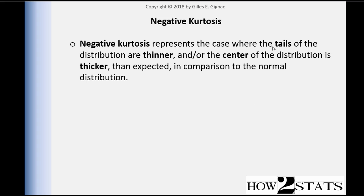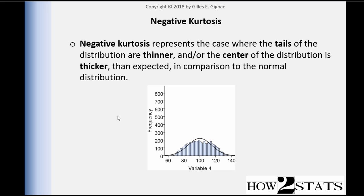Negative kurtosis represents the case where the tails of the distribution are thinner — not thicker, but thinner — and the center of the distribution is itself thicker than expected, in comparison to the total absence of any kurtosis or the presence of the normal distribution. This is what a negative kurtotic distribution looks like. The tails are thinner; there's not much going on there. You can see a gap between the distribution line and the observations. But we also have a distribution that's really quite wide and fat, with thickness popping out — that is representative of negative kurtosis.